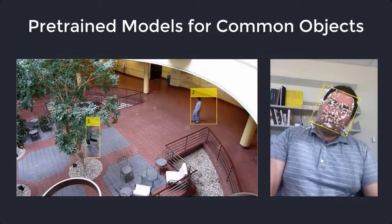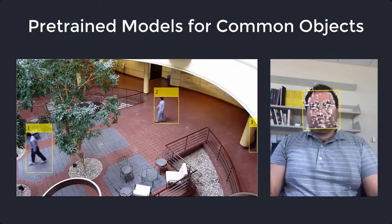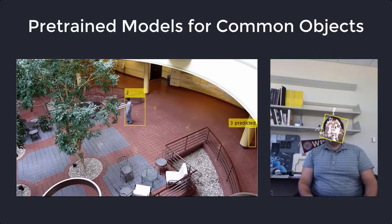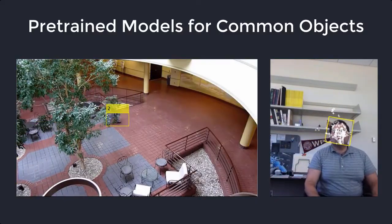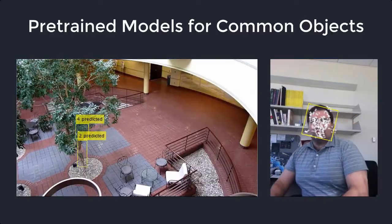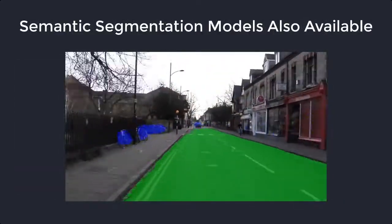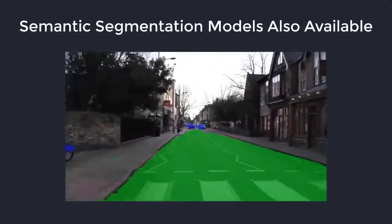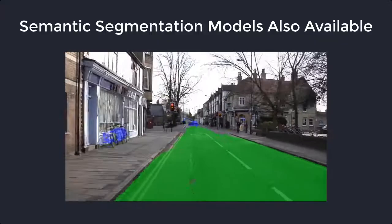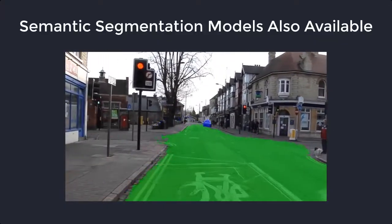You also have the option of using pre-trained models that detect faces, pedestrians, and other common objects. If you're doing semantic segmentation, you can use models like SegNet, UNet, and DeepLab.